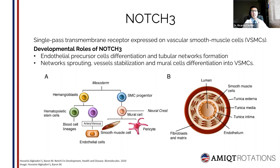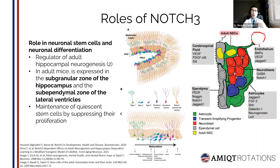Below, we can see on image A the relationship between different cell types that comprise the blood vessels, and on image B the different layers of the vessel wall. As with other NOTCH proteins — there are a total of four NOTCH proteins — we are talking only about NOTCH3.